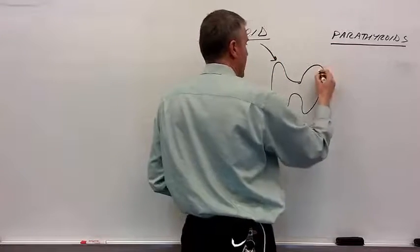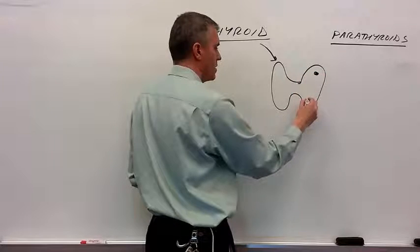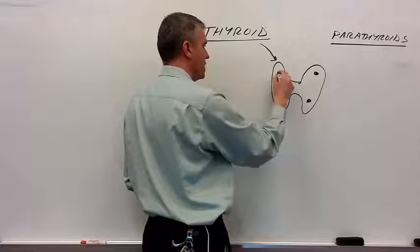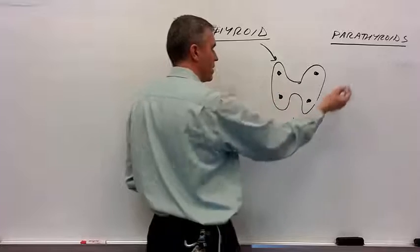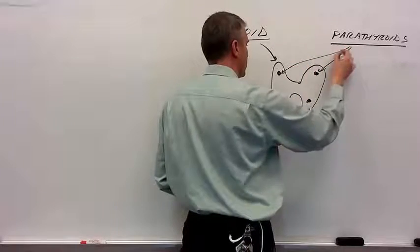The parathyroid glands - if this were the back of someone's thyroid, you might see the parathyroid glands as four little nodules on the back of the thyroid gland. Those are the parathyroids.